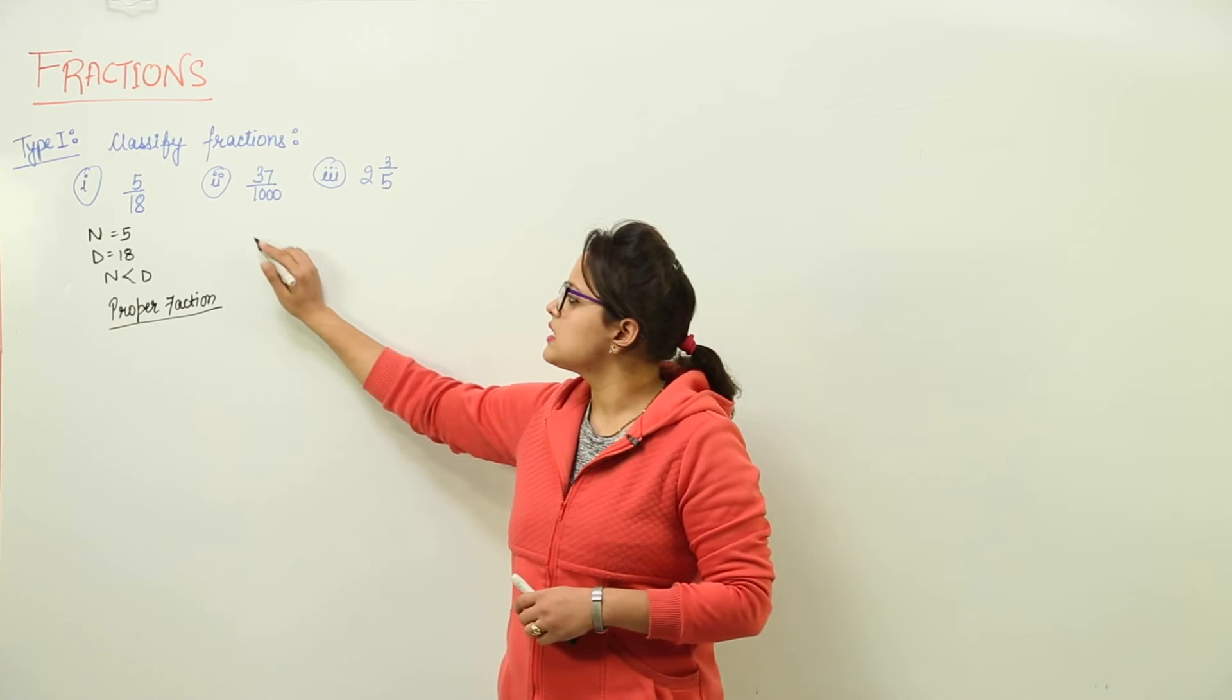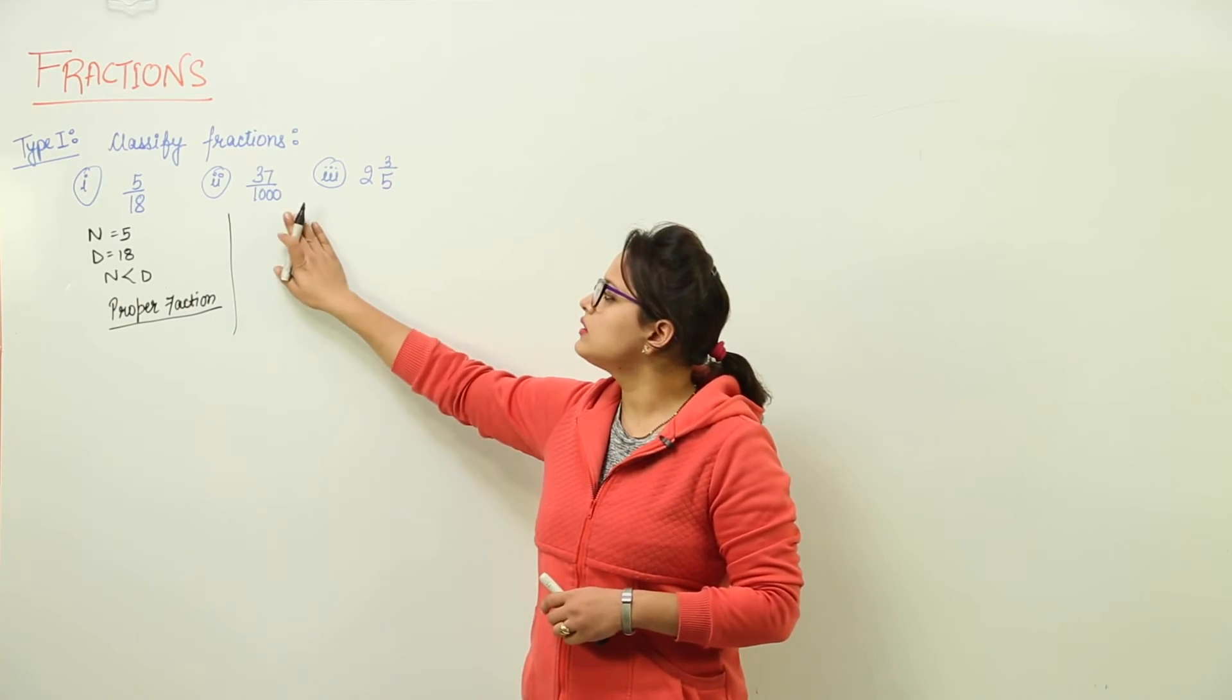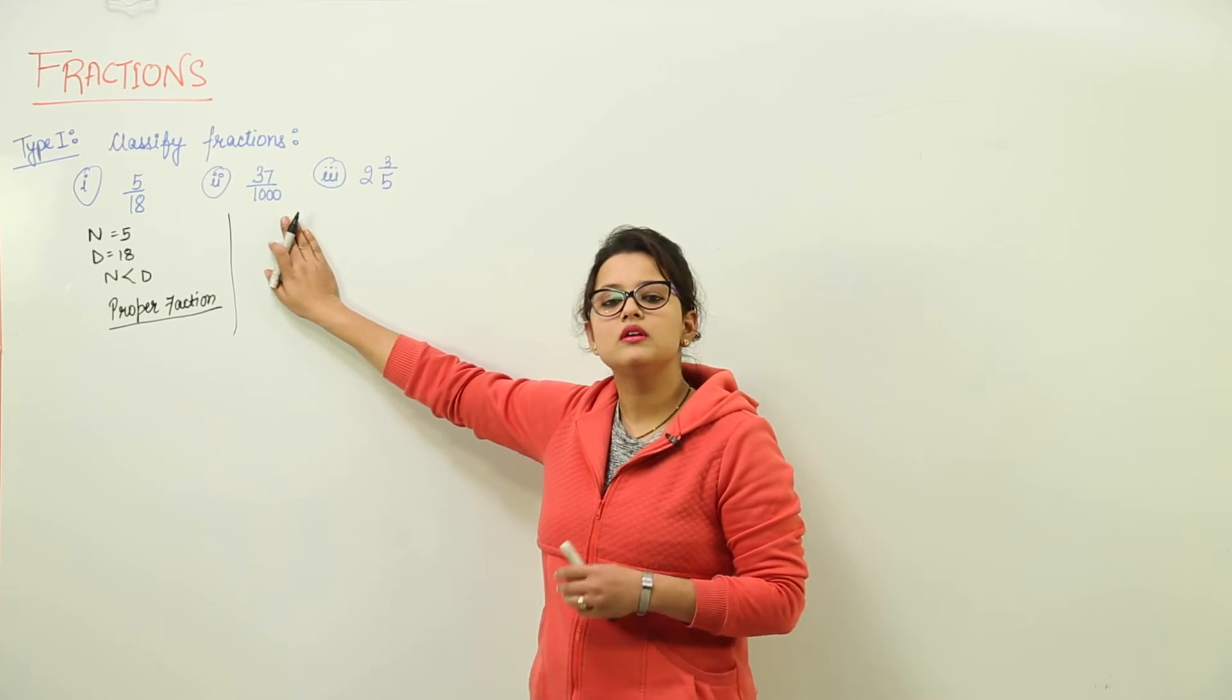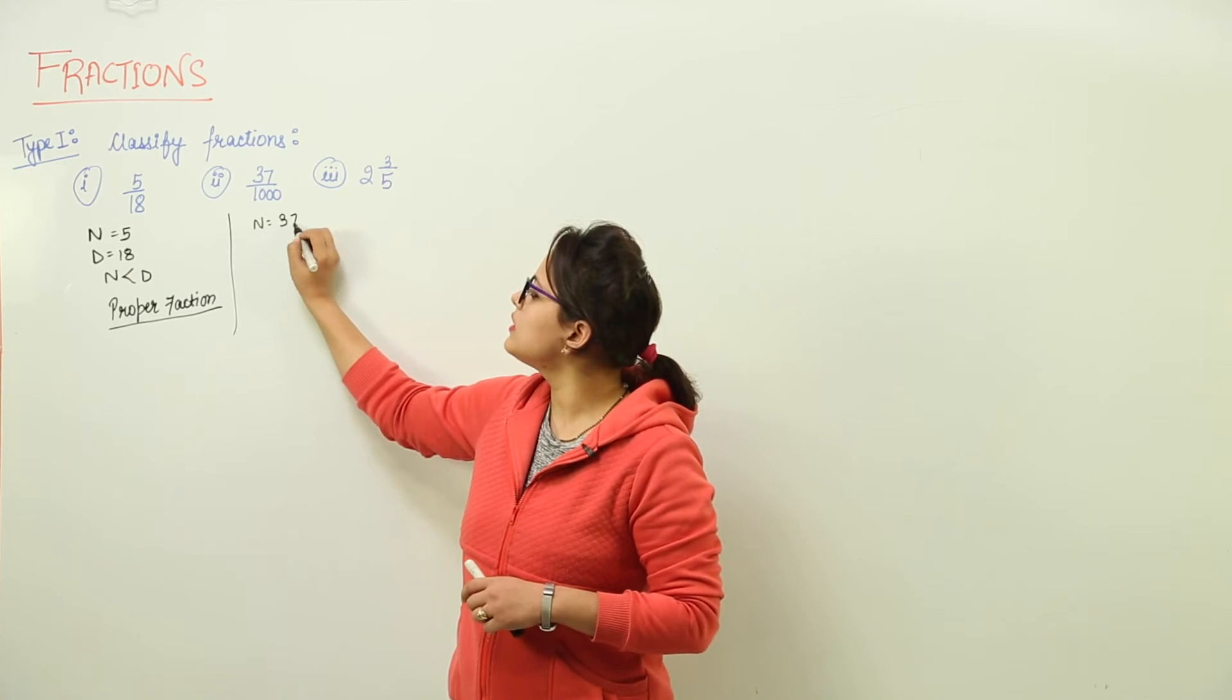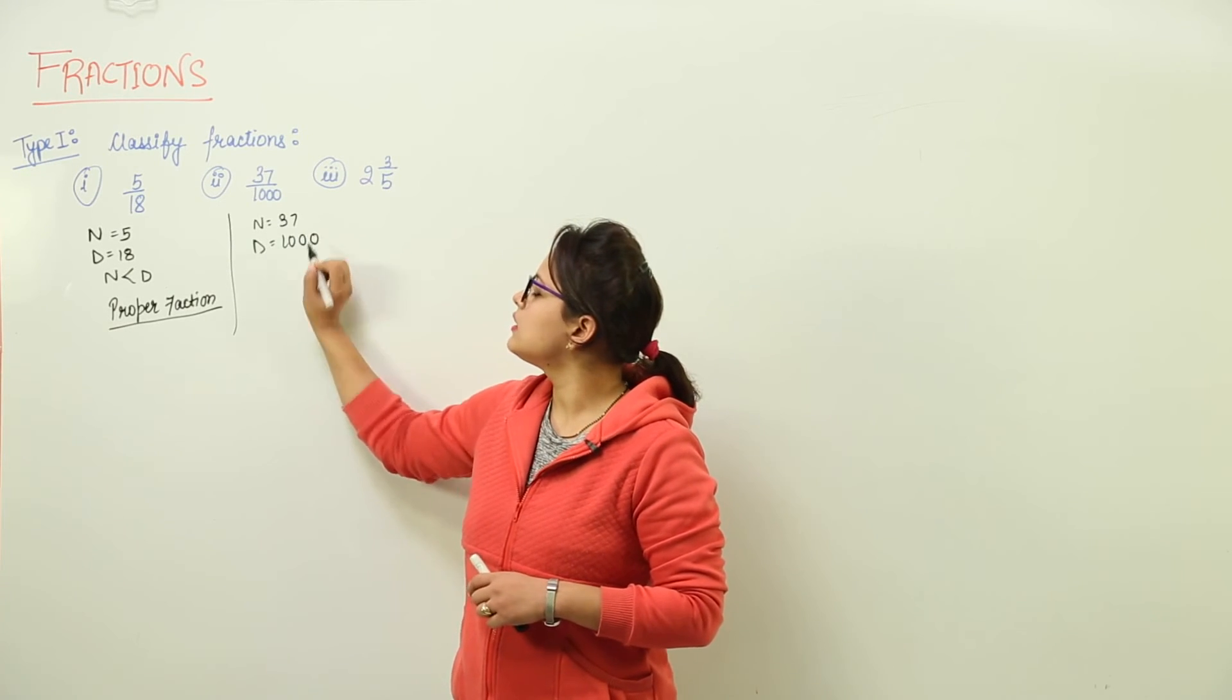Now, the next case. The next one is 37 upon 1000. Now, here we can clearly look the numerator is 37 whereas the denominator is 1000.